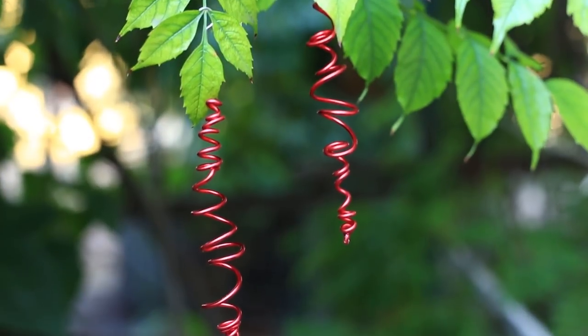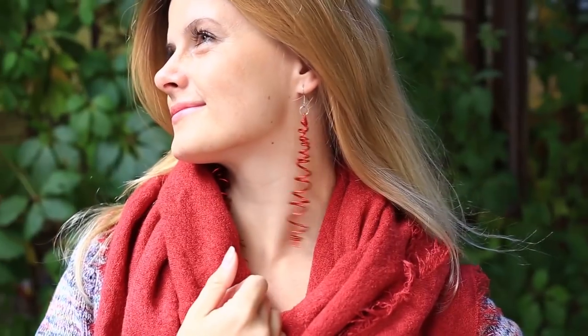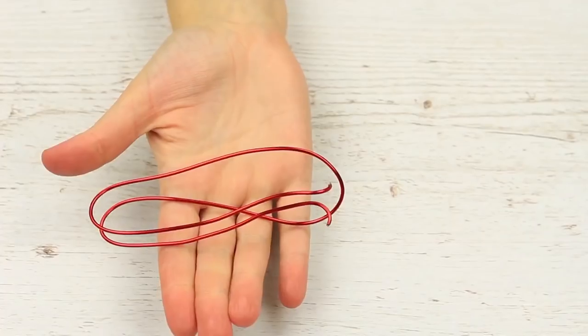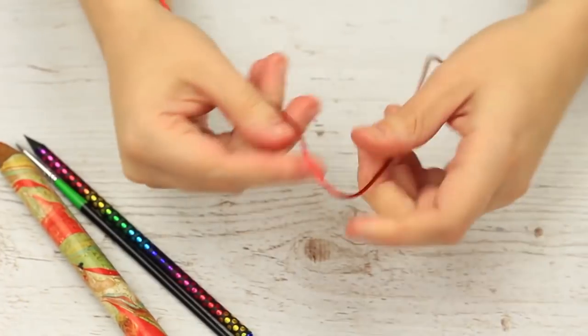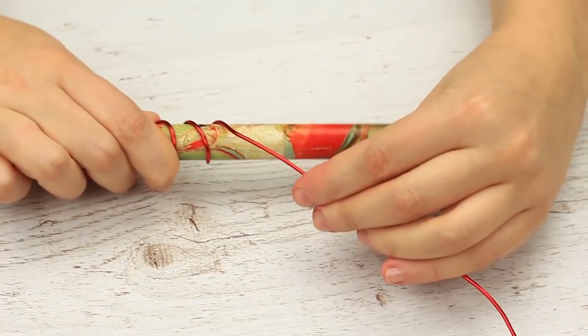We want to share another smart idea that is long spiral earrings. Take red wire. Prepare pens and pencils of different sizes. Smooth the wire and start winding it around the biggest pencil to shape a spiral.